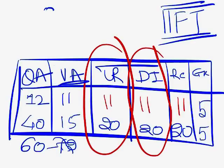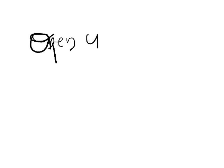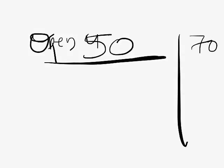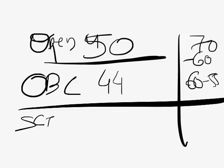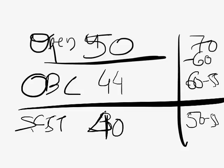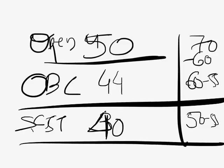The overall cutoff for the open category is around 48 to 50 — last year was 48.5, the year before was 47, so let's assume roughly 50. Your target is 50 marks, so attempt should be 65 to 70 questions depending on your accuracy. For OBC, cutoff is around 43 to 44, so attempt should be 55 to 60. For SC, ST, and PH, cutoff is around 39 to 40, so attempt should be 50 to 55.